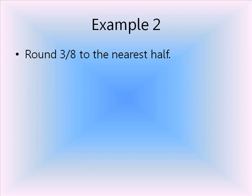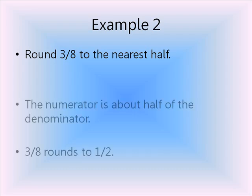For the next example, let's round 3-8ths to the nearest half. In this case, looking at the numerator and the denominator, 3 is about half of 8. It's not close to it, but it's not real far away from it. Because it's about half, we're going to round 3-8ths to 1-half.